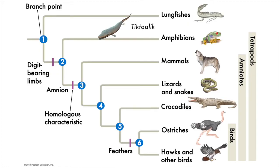Identifying homologies is how phylogenies are constructed, and these homologies also reflect the nested hierarchies of Linnaeus. This phylogeny shows the evolutionary history of the vertebrates. I've added in a fossil find as well — an important transitional form between the fishes and the amphibians called Tiktaalik. Tiktaalik may be one of the first animals to occupy the planet with a humerus and radius, etc. Notice at each of the branch points there is something new not present in the shared common ancestor but present in all descendants: digit-bearing limbs, fingers and toes; the presence of an amnion which enables life on land; feathers.